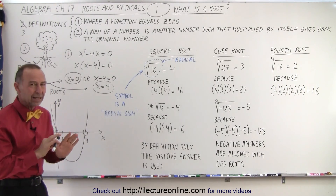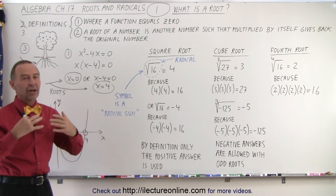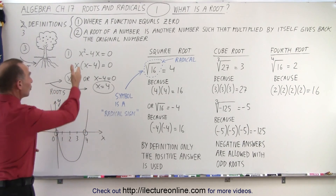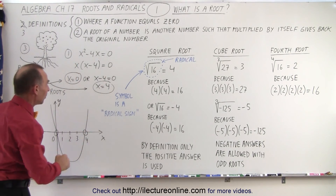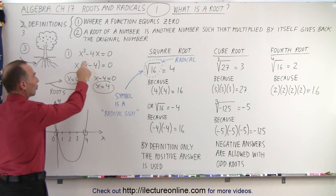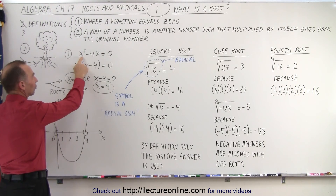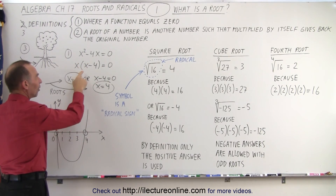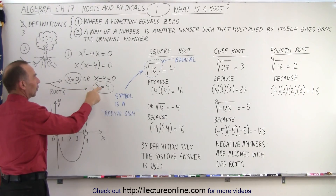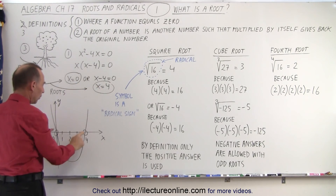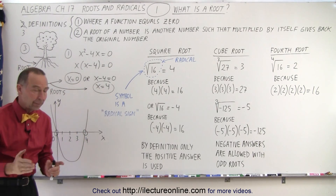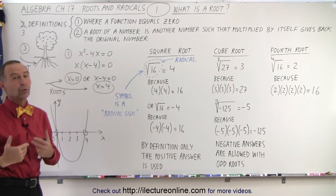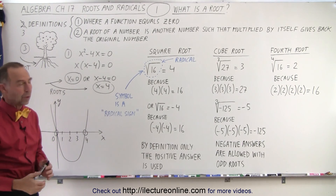That doesn't really affect the concept of roots and radicals directly, but it does in this fashion. For example, when we have the equation x squared minus 4x equals zero and we solve for x, x can be zero or x can be four. Those are the places where a parabola will cross the x-axis, and those are what we call the roots of the equation.